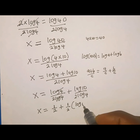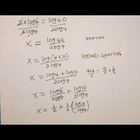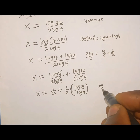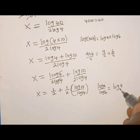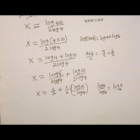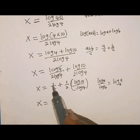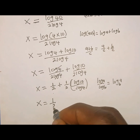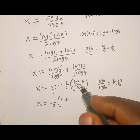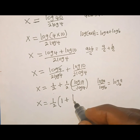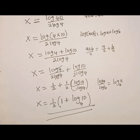We factor out 1 over 2, leaving log of 10 over log of 4 inside the bracket. We recall the change of base property: log of a over log of b can be written as log of a to the base of b. Applying this, 1 over 2 is factored out, and inside the bracket we have 1 plus log of 10 to the base of 4. So the final answer is x equals one half times the quantity 1 plus log base 4 of 10.